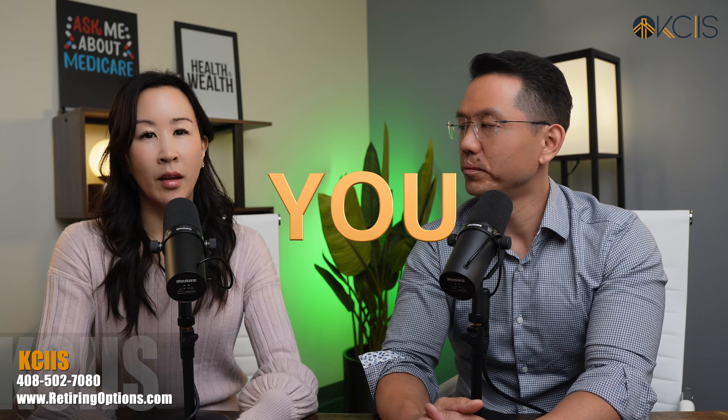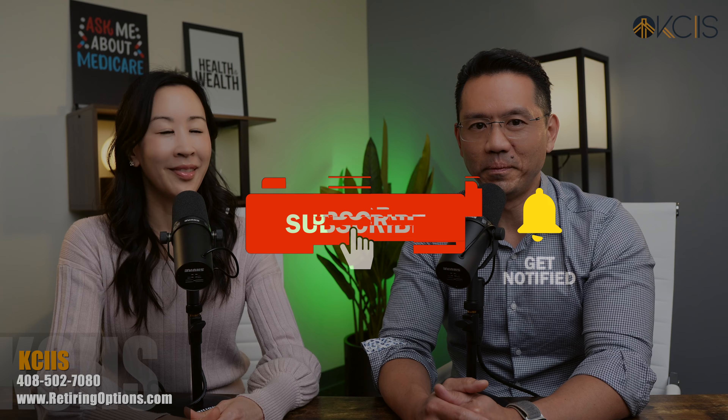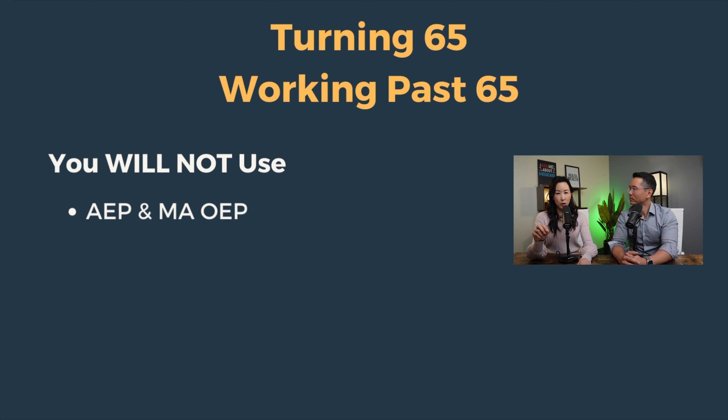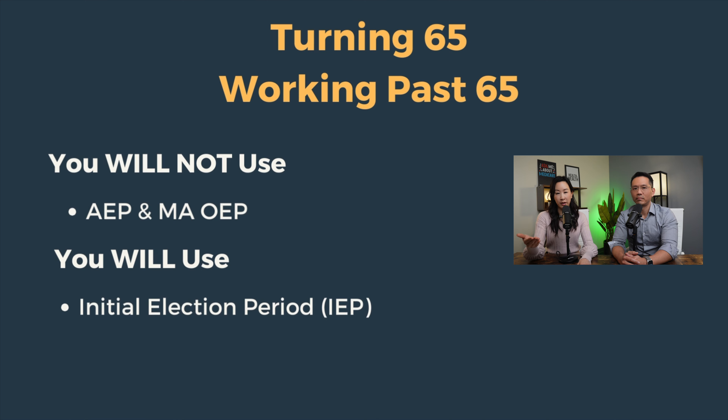Now let's talk about MAOEP. This period applies only to the following: changing your Medicare Advantage to another Medicare Advantage. Please note the word 'changing,' not enrolling — therefore, you must already have a Medicare Advantage plan. January 1st to March 31st does not allow you to enroll into a Medicare Advantage plan. Besides changing your Advantage plan, you can drop your Medicare Advantage and return back to Original Medicare, but a requirement is that you must enroll in a standalone prescription drug plan. During this time period, you cannot change your drug plan. Again, those with a Medicare supplement plan and/or a drug plan, the MAOEP does not apply to you.